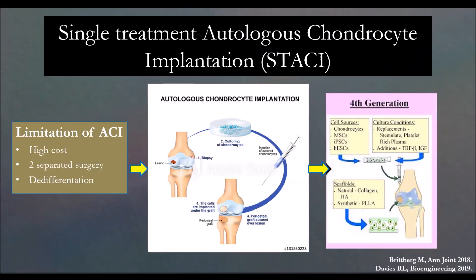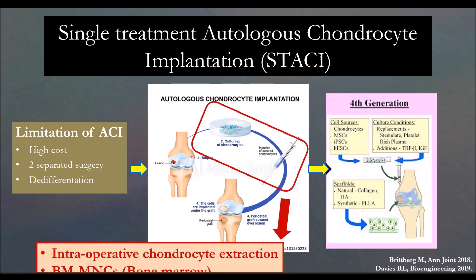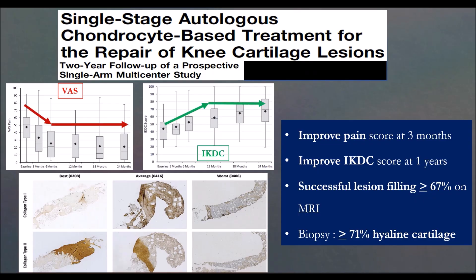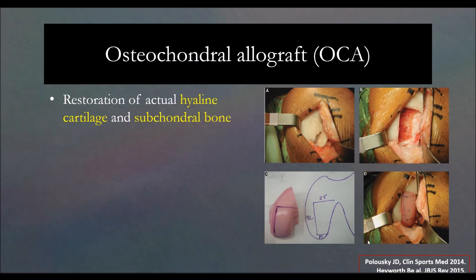You put the construct in and apply fibrin glue to seal it — it is good for big lesions. Nowadays there is single-stage ACI, which is more popular than two-stage. You harvest the cartilage, mix it with marrow cells, and inject it into the lesion. It is becoming more popular but at very high cost. You can mix chondrocyte extraction with marrow cells. The single-stage IKDC at one year is good, with lesion filling of about 67% on MRI, and biopsies show 71% hyaline cartilage after surgery.